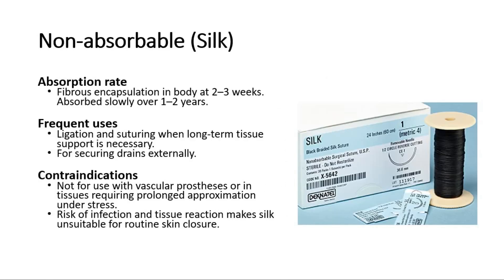First is silk. Silk is used for ligation and suturing when long-term tissue support is necessary, and also for securing drains externally. For contraindication, it is not for use with vascular prostheses or in tissues requiring prolonged approximation under stress. Risk of infection and tissue reaction makes silk unsuitable for routine skin closure.